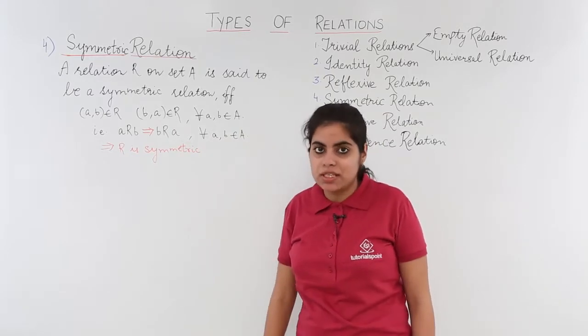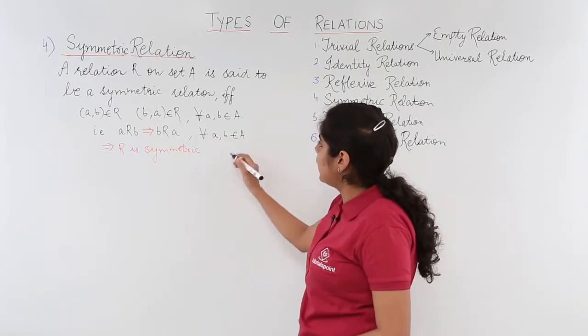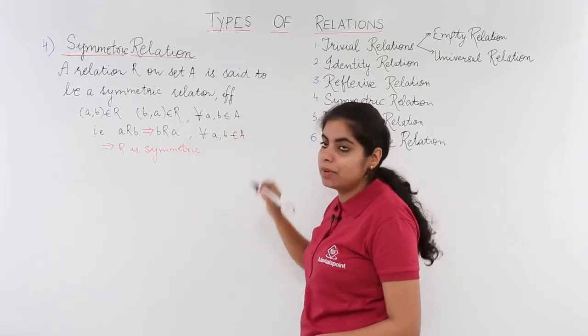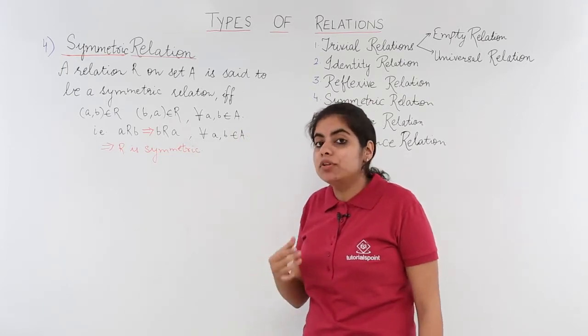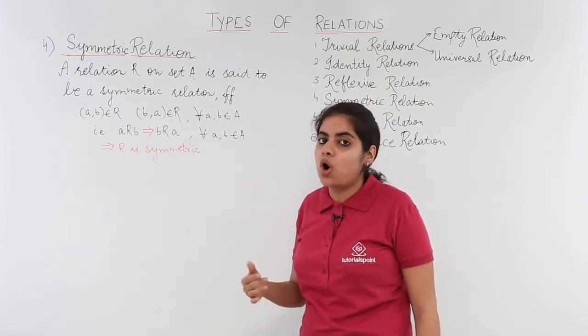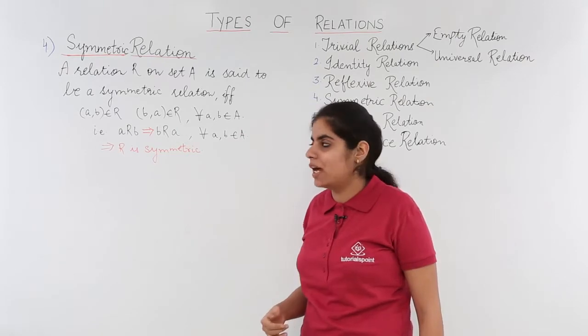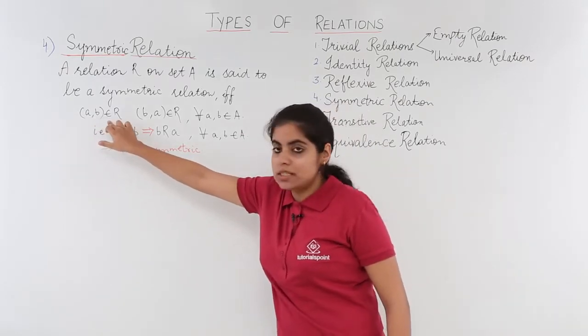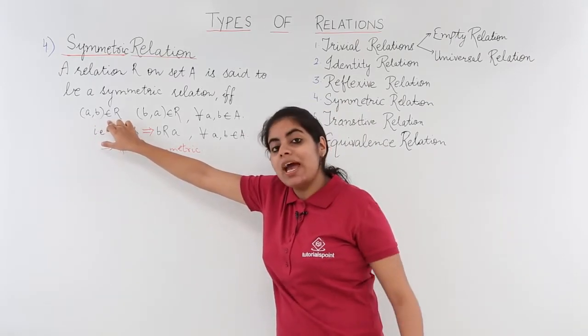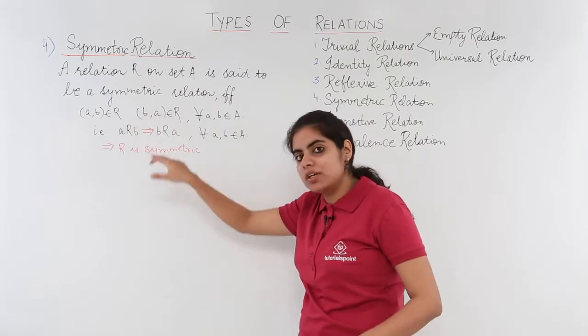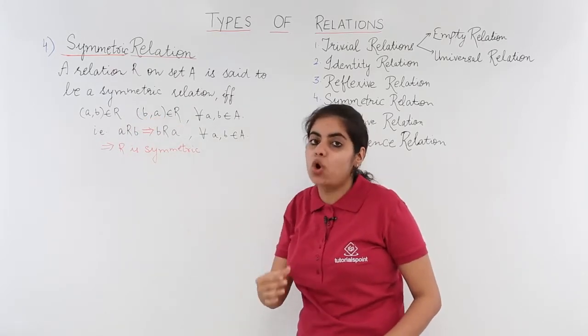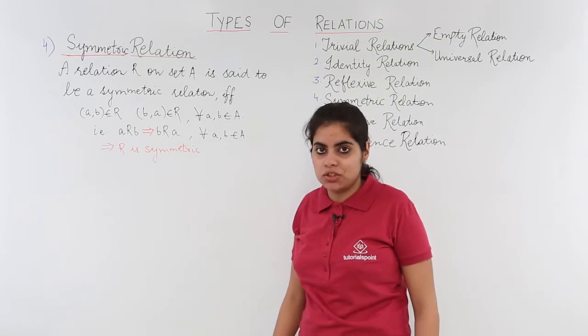That means if I have a set which is capital A, then if different elements of the set are related such that the first and the second element are present and the second and the first element in the ordered pair is also present, then it is a symmetric relation.